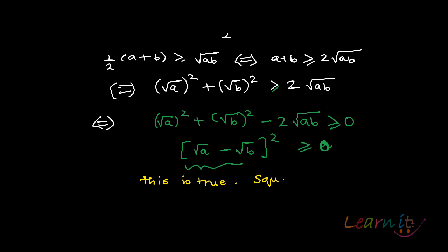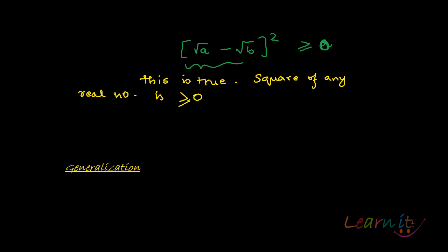This is true because square of any real number is always greater than or equal to 0. Square of any real number is greater than or equal to 0, correct? So that is why this is very true, and hence this inequality would hold because what we started off with turns out to be very true.